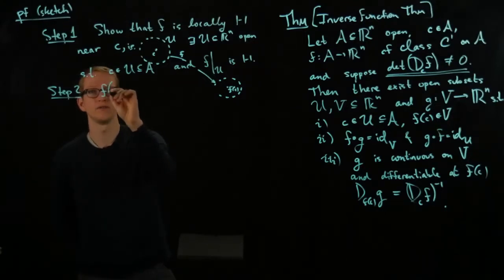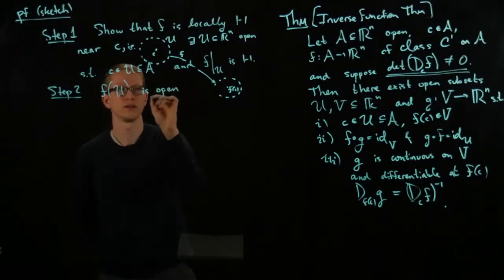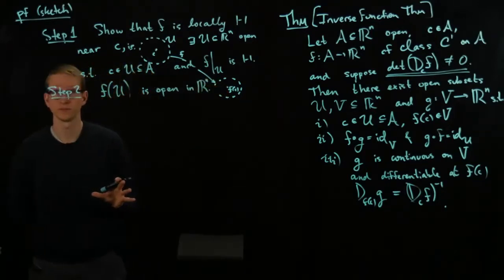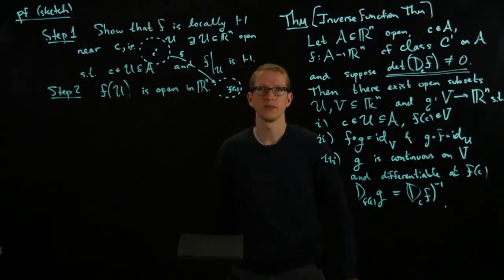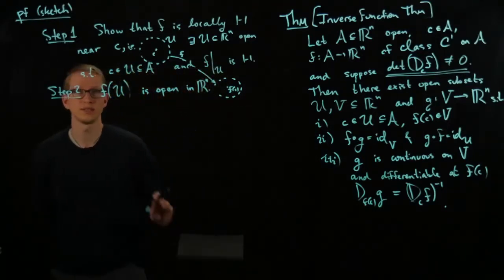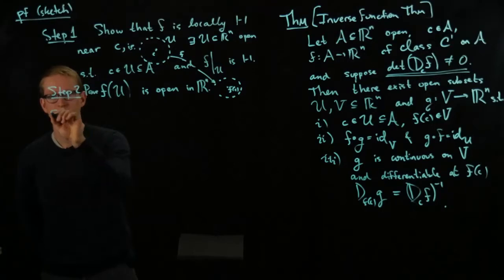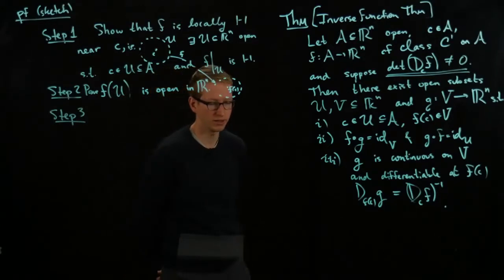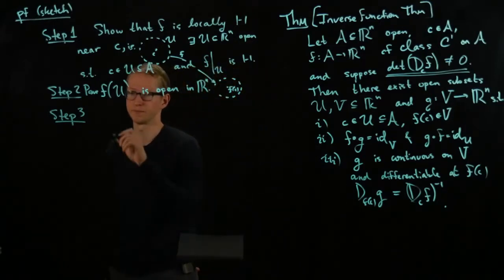And it turns out that F of U is open in R^n. That should surprise you. The reason is because even if I have a continuous function, the image of an open set under a continuous function need not be open. So, step 2 is to prove that the image of U is open in R^n. And now that we know that F of U is open in R^n, we can at least make sense of continuity and differentiability.